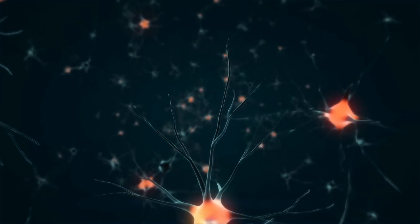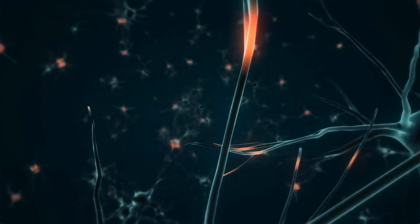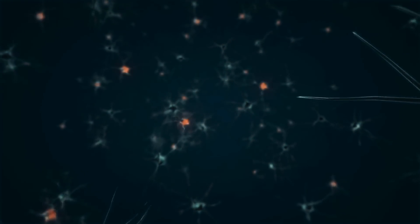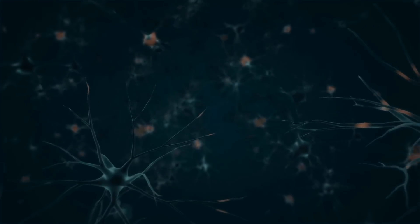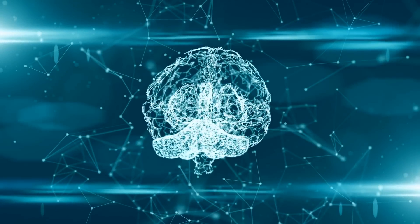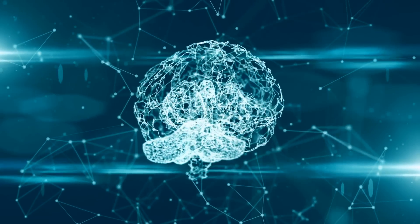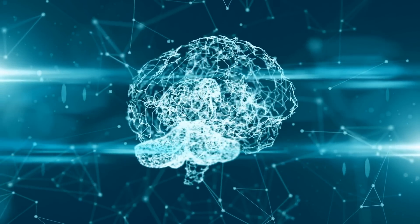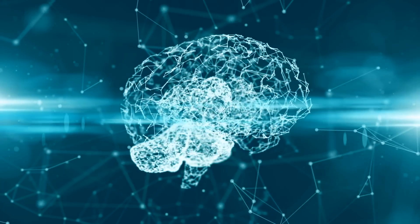The technology works by implanting small, flexible threads into the brain, which are then connected to a small device called the link. The link is a small computer that is implanted behind the ear and is designed to communicate wirelessly with external devices, such as smartphones or computers.